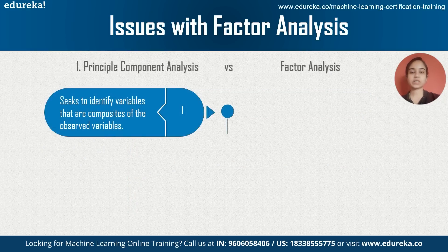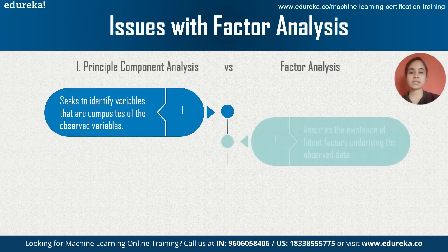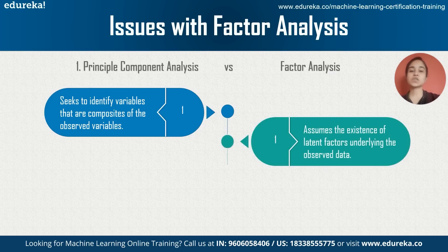PCA tries to find composite variables from observed variables. For example, in a house pricing dataset, PCA might identify that air quality index is closely determined by the number of parks in the locality. In factor analysis, however, we assume there are latent factors — immeasurable factors that can only be derived from the given numeric variables.